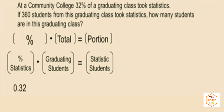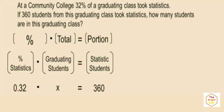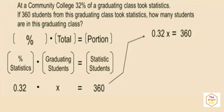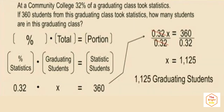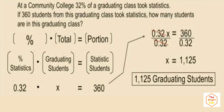Our percent is 32%. Converting to a decimal by moving the decimal two places to the left gives us 0.32. So our equation is 0.32 times x equals 360, where x represents the total graduating class. To solve, we divide both sides by 0.32. 360 divided by 0.32 equals 1,125. So there are 1,125 students in the graduating class.